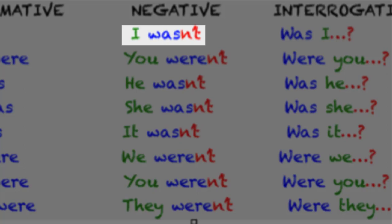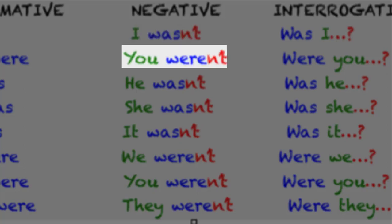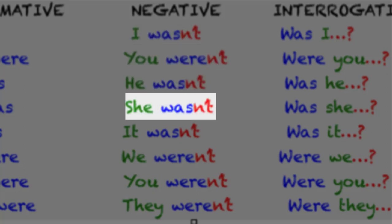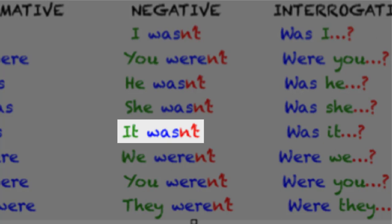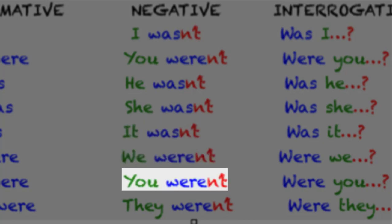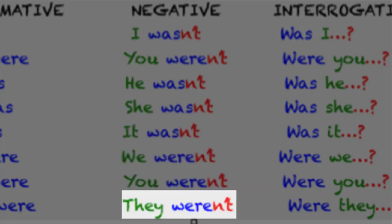Negative: I wasn't. You weren't. He wasn't. She wasn't. It wasn't. We weren't. You weren't. They weren't.